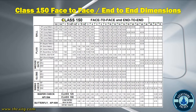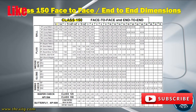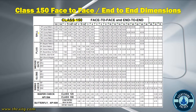In this chart you will find Class 150 face-to-face and end-to-end dimensions. Here you will have all sizes of the valves, and here you will have your ball valves, plug valves, wedge gate valves, globe valves, and swing check valves. We also have wafer check valve and butterfly valve dimensions as well. Each valve will have a different pattern.